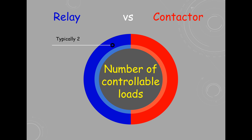Relays are designed to control two or three loads. Contactors generally control four loads. Moreover, contactors offer load expandability up to six, eight, or even twelve loads.